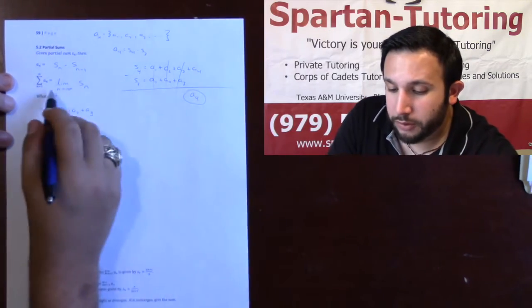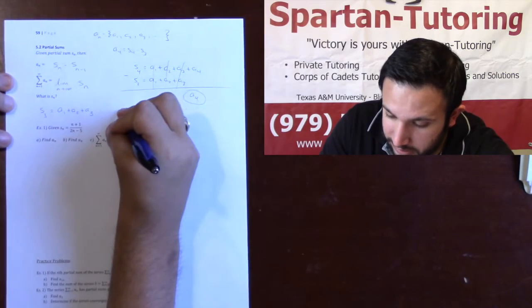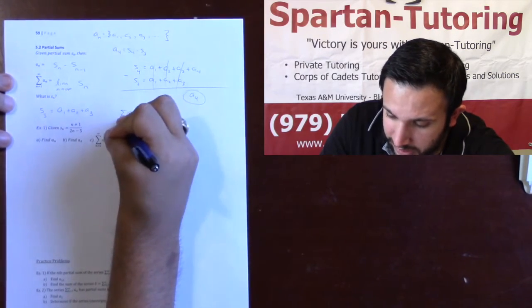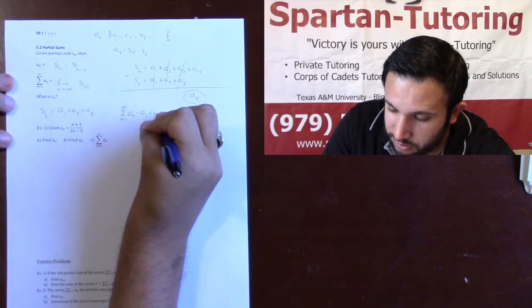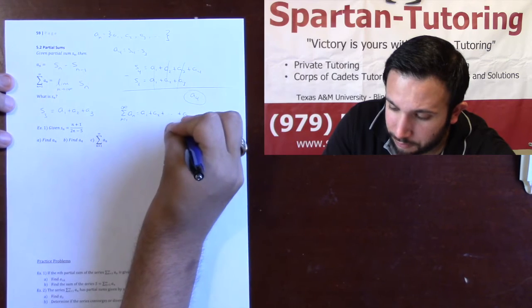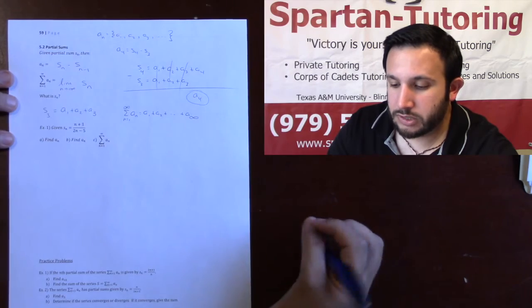So if I want the infinite sum, the infinite sum of An from 1 to infinity, this is A1 plus A2 plus literally every infinite term in your list.